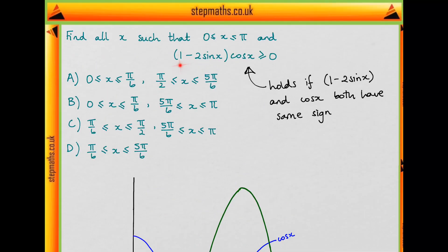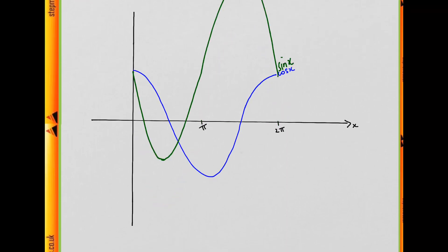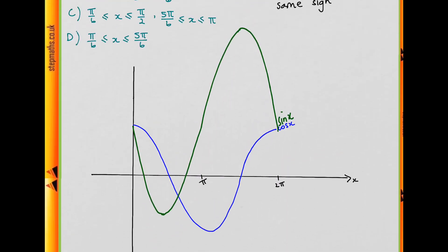And finally it's 1 - 2sin x, so we're going to have to shift it up 1. Right, so this is what we end up with.